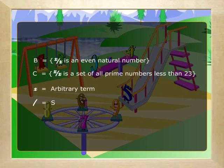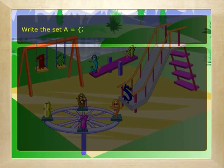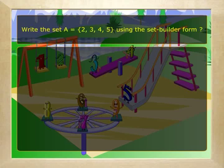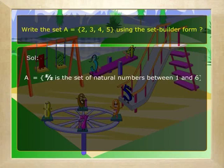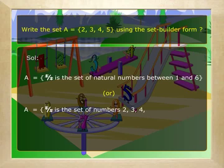The bar stands for 'such that'. Write the set A = {2, 3, 4, 5} using the set builder form. Solution: A = {x such that x is the set of natural numbers between 1 and 6}, or A = {x such that x is a set of numbers 2, 3, 4, and 5}. That's simple, isn't it? Of course there is more than one way of writing it.